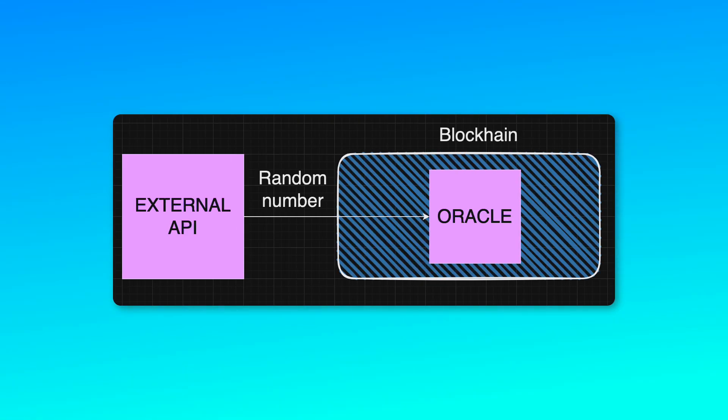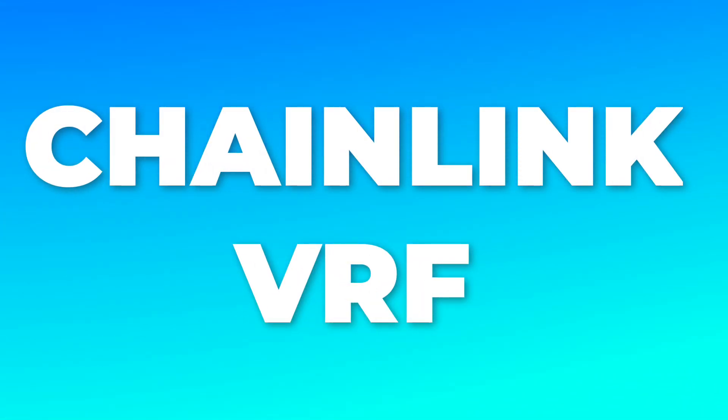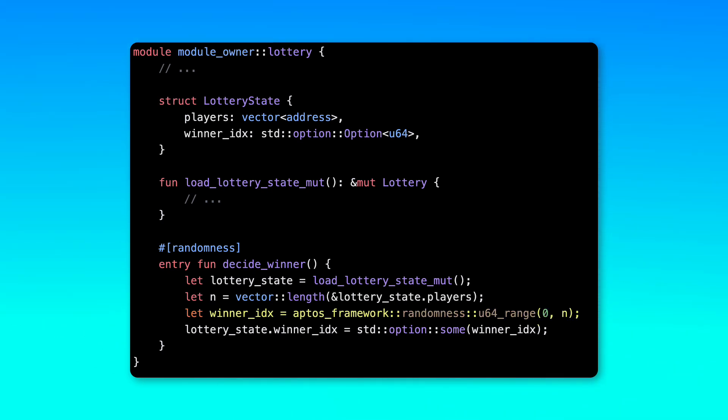Another solution is to generate a random number off-chain and send this number on-chain via oracles. This is implemented by Chainlink VRF, and it's currently the best answer to randomness generation on Ethereum-based blockchains. Unfortunately, it's centralized. Can we have on-chain decentralized and secure randomness? Yes! On Aptos, you can use the Aptos Randomness API. Under the hood, it generates randomness on-chain in a decentralized and secure way. So when you need randomness in your decentralized application, there is no need to use a randomness oracle or create your own system.